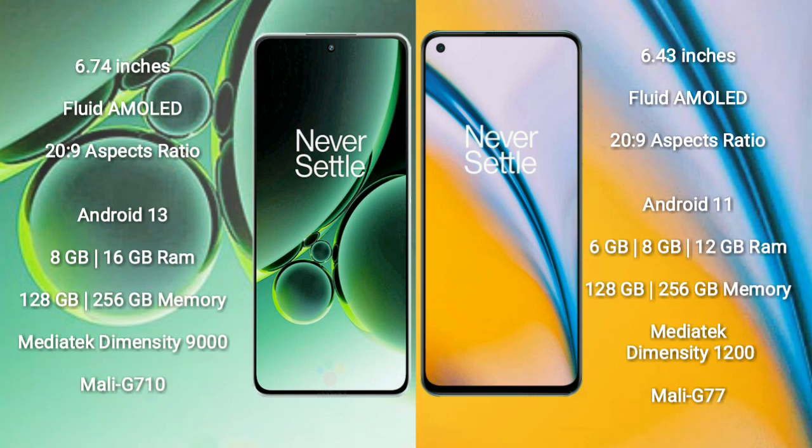OnePlus Nord 2 comes with 6GB, 8GB, or 12GB RAM and 128GB to 256GB internal storage, powered by the MediaTek Dimensity 1300 processor and GPU Mali-G77.